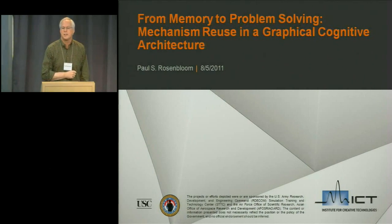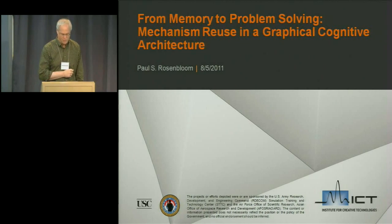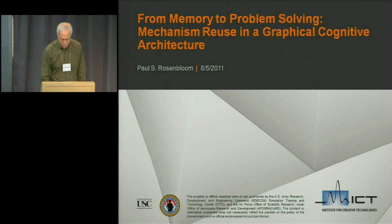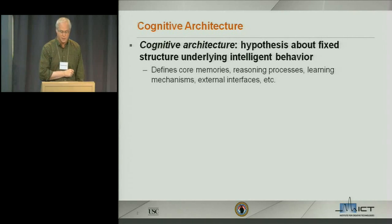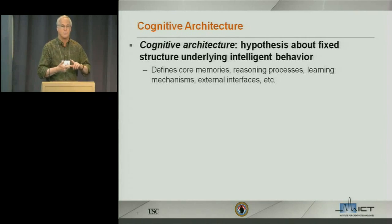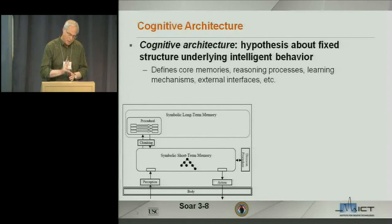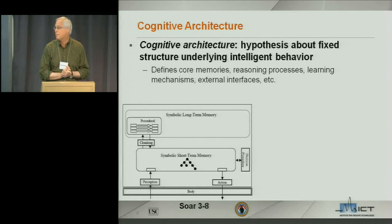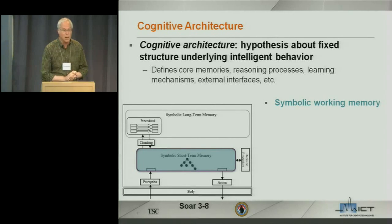What I'm going to do today is tell you about an experiment in mechanism reuse in a graphical cognitive architecture, going from a memory architecture to a problem-solving architecture. I'll start with just a touch of background on what a cognitive architecture is — essentially a hypothesis about the fixed structure underlying intelligent behavior. It defines the core memories, reasoning processes, and learning mechanisms. Here's a quick concrete example: the SOAR architecture in midlife, essentially versions three through eight.